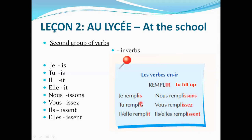For conjugation, you remove the '-ir' ending and replace it with the appropriate ending. For 'je' and 'tu,' '-ir' becomes '-is.' For 'il' and 'elle,' it becomes '-it.' For 'nous,' it becomes '-issons.' For 'vous,' it becomes '-issez.' For 'ils' and 'elles,' it becomes '-issent.' So 'remplir' conjugates as: je remplis, tu remplis, il remplit, elle remplit, nous remplissons, vous remplissez, ils remplissent, elles remplissent. This is how an IR verb is conjugated in the present tense.